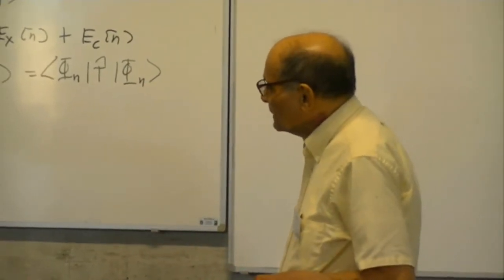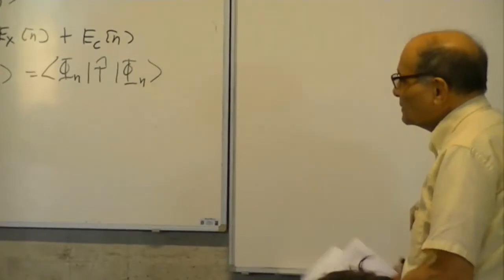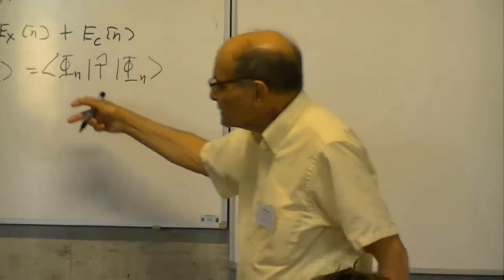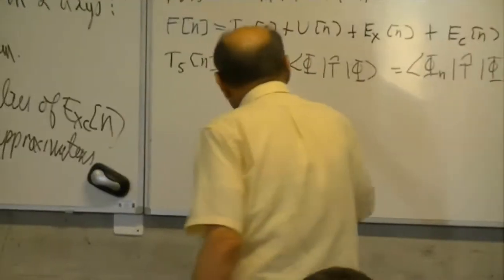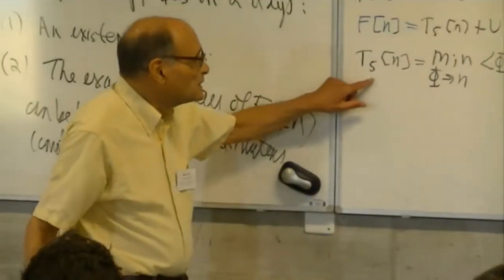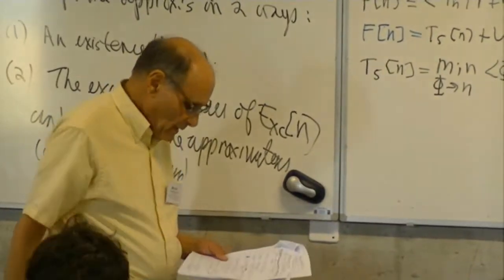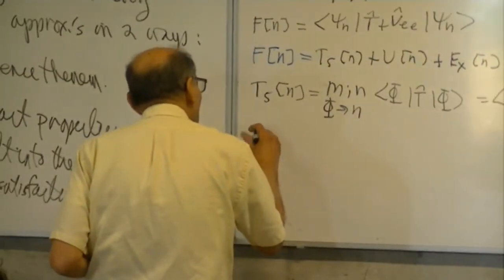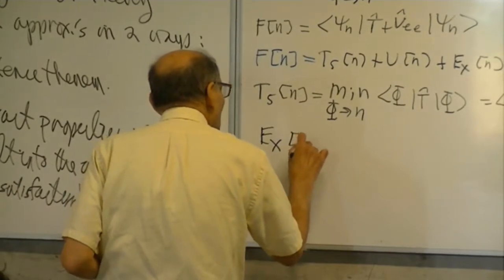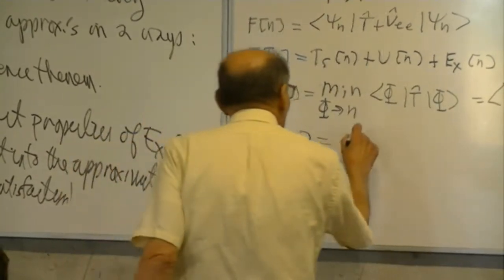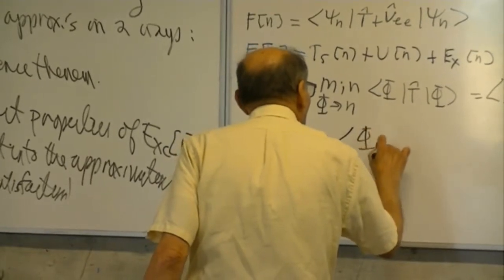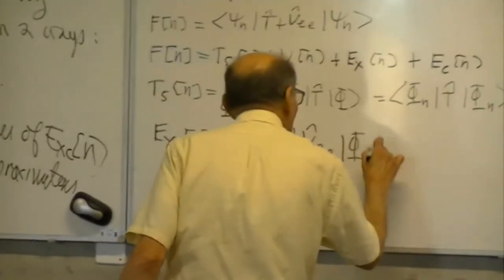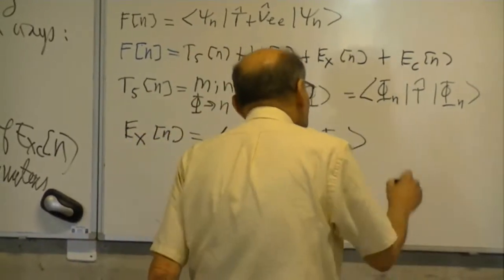Here you're minimizing just the kinetic, and Thomas-Fermi tries to approximate this. With this phi_n, the exchange Ex[n] is equal to the expectation value of phi_n with the electron-electron interaction Vee, minus U[n]—the classical repulsion.